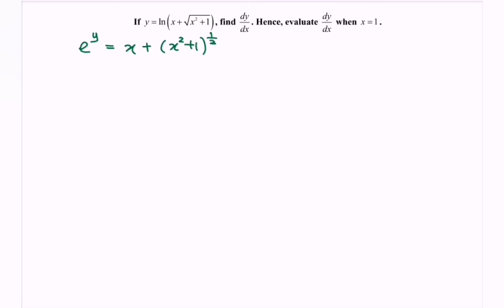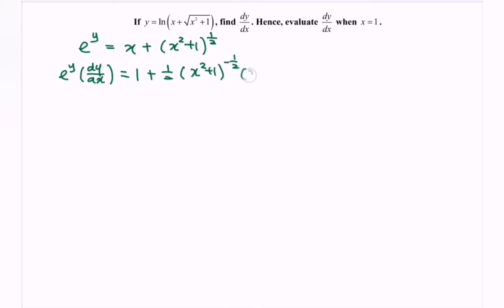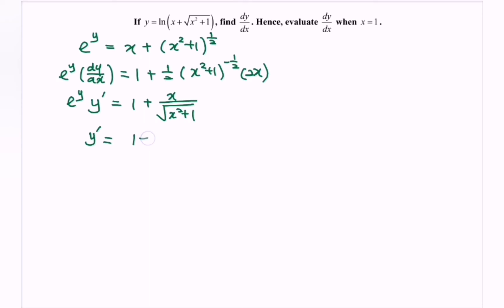Differentiating both sides with respect to x: differentiating e^y gives e^y times dy/dx. On the right side, differentiating x gives 1, plus (1/2)(x² + 1)^(−1/2) multiplied by the derivative of the inner function, 2x. Rewriting, e^y times y prime equals 1 + x / √(x² + 1).